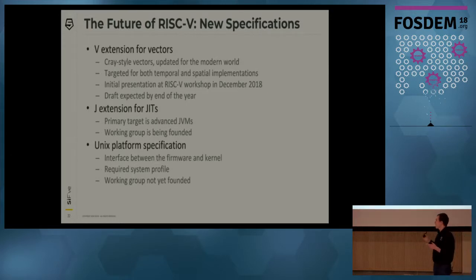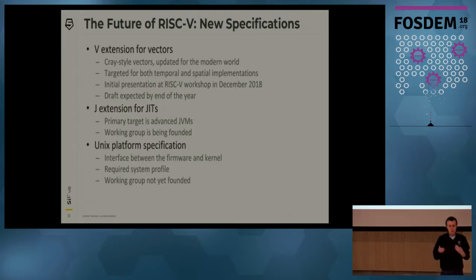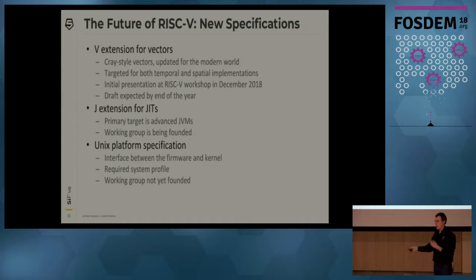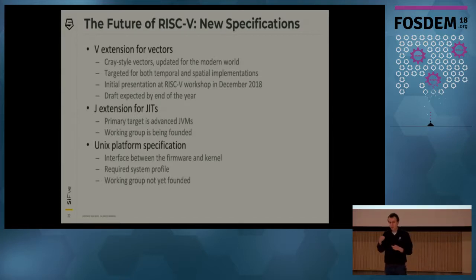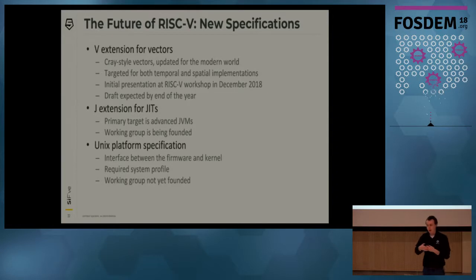Additionally, we're working on something called the J extension, which is for advanced JITs and really means JVMs like OpenJDK. There's a standards process going through with this, and if you're interested in working on a JDK for RISC-V, now would be a great time to start. The working group writing the ISA extension is just being formed, so you can hop on the mailing list, be part of the J extension from the start, and help port a JVM implementation to RISC-V.